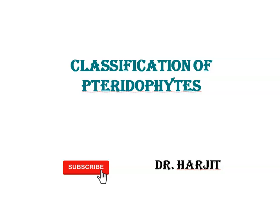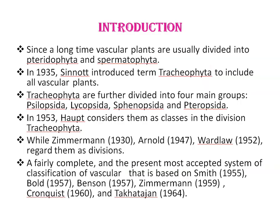Our today's topic is Classification of Pteridophytes. The term Pteridophytes is derived from two words: 'pteron' meaning feather and 'phyton' meaning plant. Thus, Pteridophytes are the plants with feather-like leaves. Their first traces were recognized in the Silurian period of the late Paleozoic. Pteridophytes occupy a transitional position between Bryophytes and Spermatophytes.